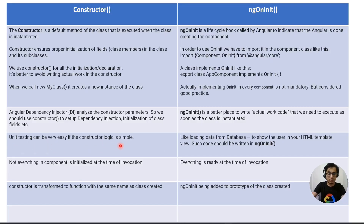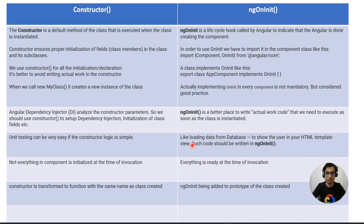Unit testing is easier when constructor logic is simple. When running automated unit tests, creating an instance of a class invokes the constructor, so it's good not to have unnecessary code there — the constructor's purpose is to create an instance and hand it over. In ngOnInit, if we need to fetch data from a database, communicate with an API, or subscribe to an observable, we put that in ngOnInit.